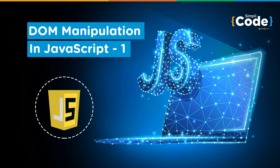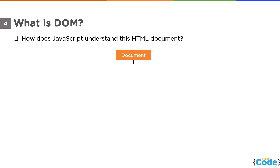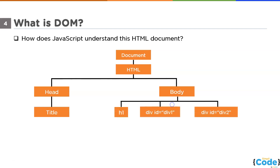So without any further delay let's get started. As we know, the document object model is simply the same HTML document with a different representation. The reason behind this is that it's easy for JavaScript to interpret this format. JavaScript can't understand tags in an HTML document but it can understand these objects. Therefore JavaScript can easily manipulate these objects using different functions which we'll discuss in today's video. If you haven't watched the previous video on what is document object model, I suggest you go through it before we move on to DOM manipulation.